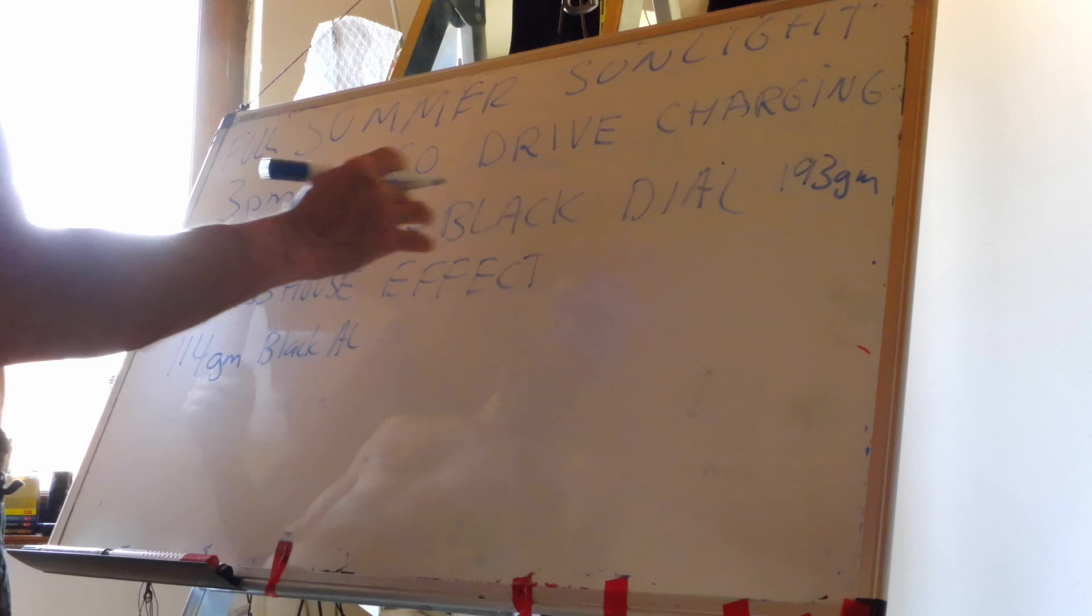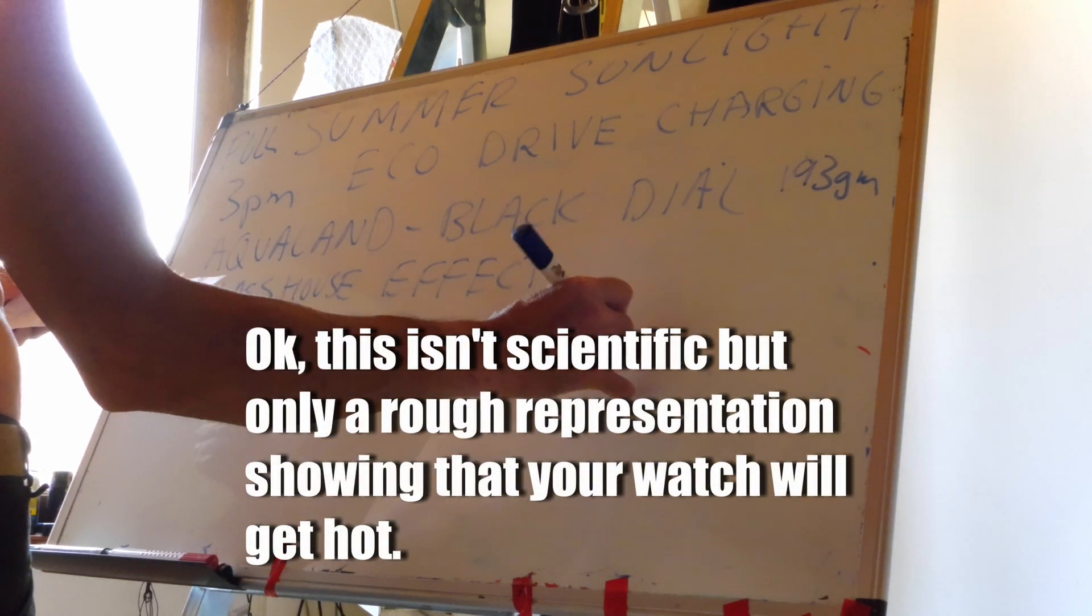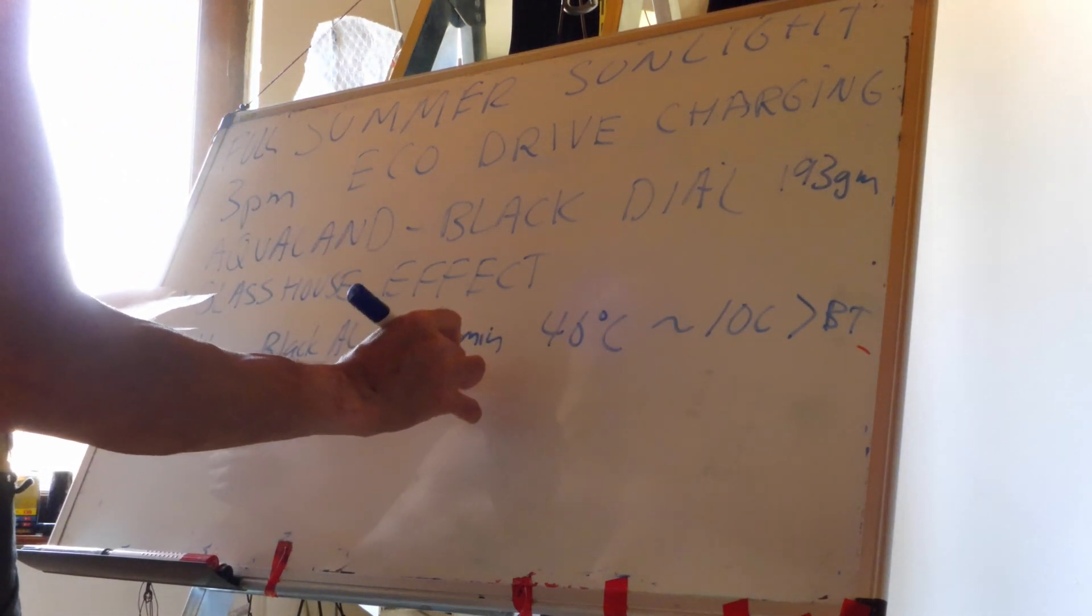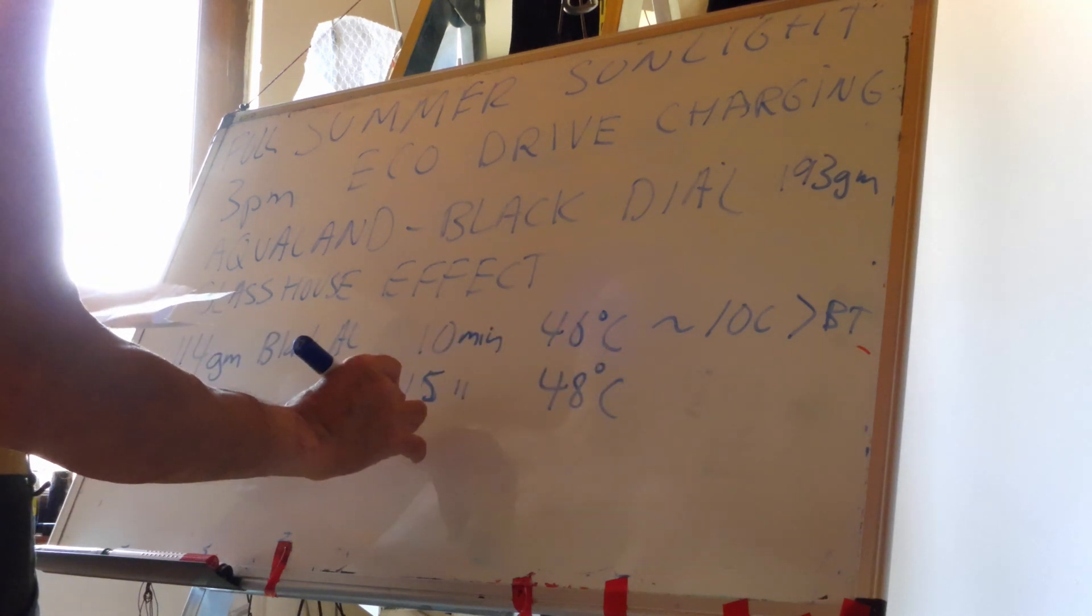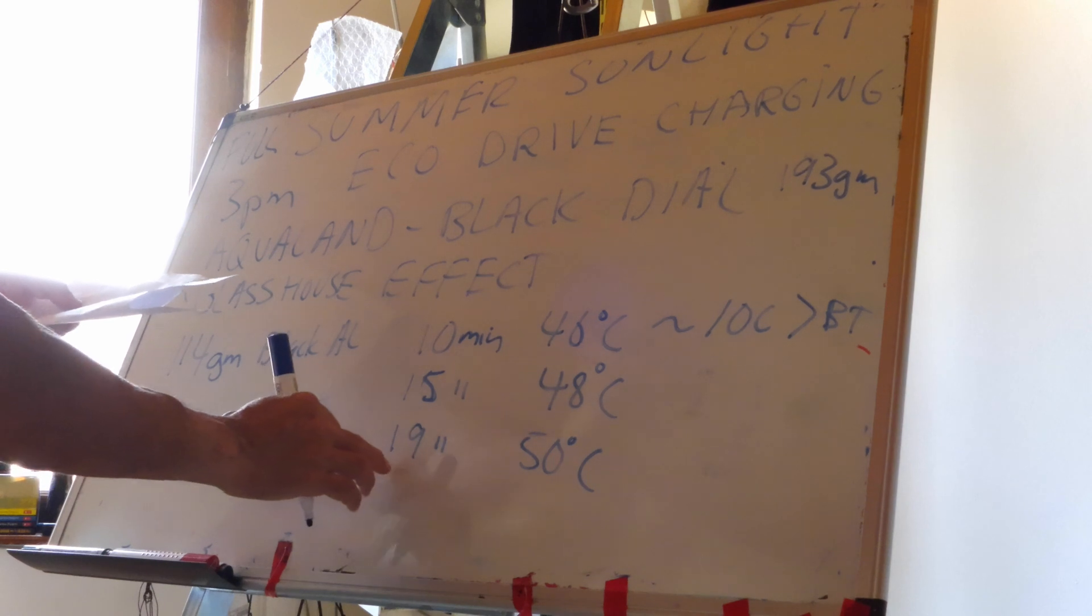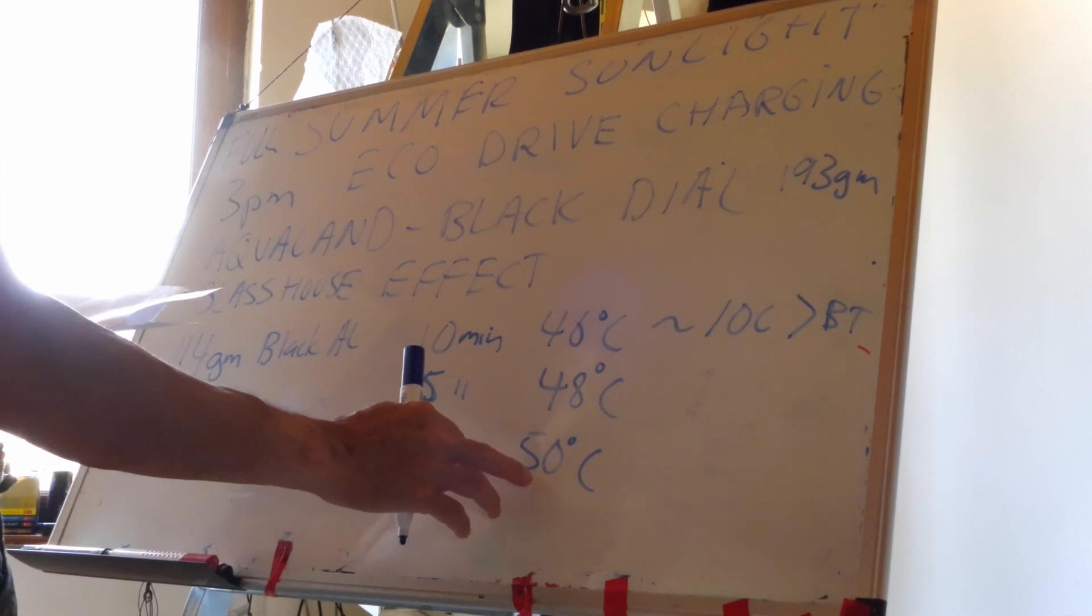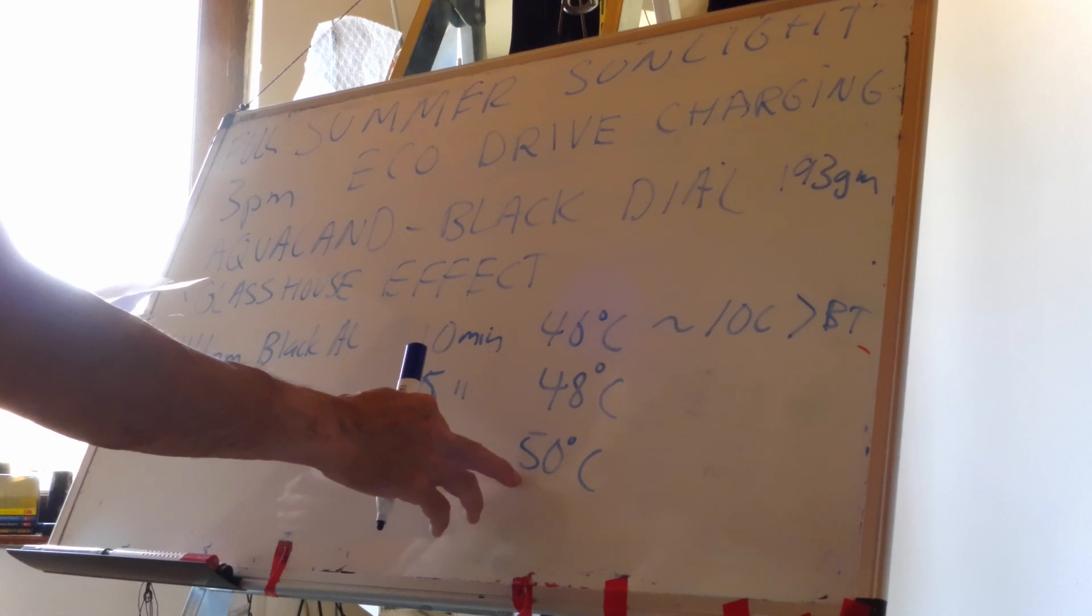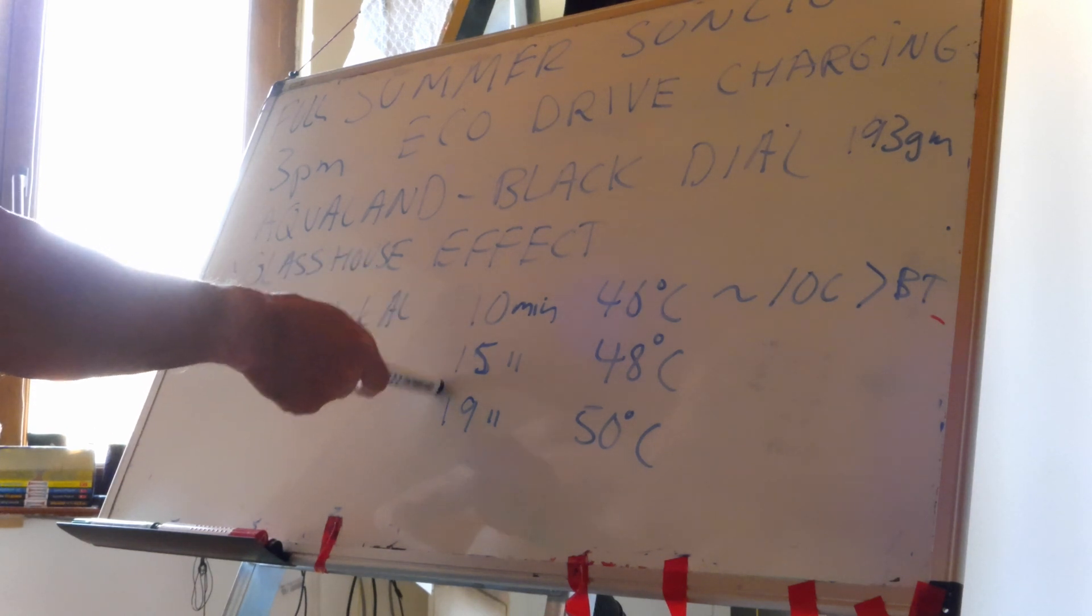And I monitored the temperature not being cooled. After 10 minutes, that black surface was 46 degrees Celsius, so that's approximately 10°C greater than body temperature. After 15 minutes, it was 48, it increased 2 degrees, and then after almost 20 minutes, 19 minutes, it was exactly at 50 degrees Celsius. So that's not a long time that could easily be left in the sun like that, and the heat sink was 50 degrees.